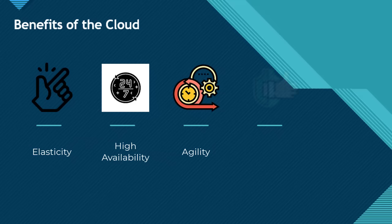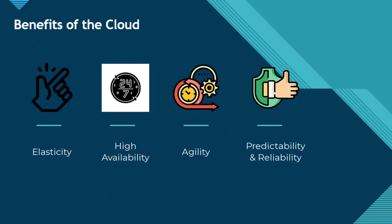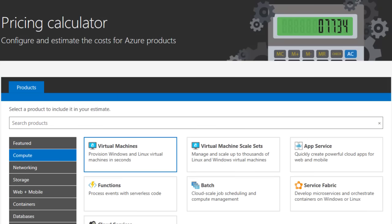We also have predictability and reliability. Microsoft Azure has over 200 data centers across 60 regions of the world, making it easier for Microsoft to give service level guarantees to their customers. Because of the level of redundancy on Microsoft Azure, you can be confident that your service will always be available. As a result, you're able to predict what your consumption is going to look like and how much you're likely going to be paying either monthly or yearly. If you'd like to have an idea of your cost upfront, you can take advantage of a tool such as the Azure pricing calculator.